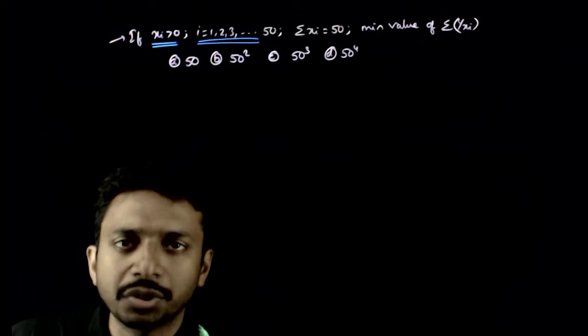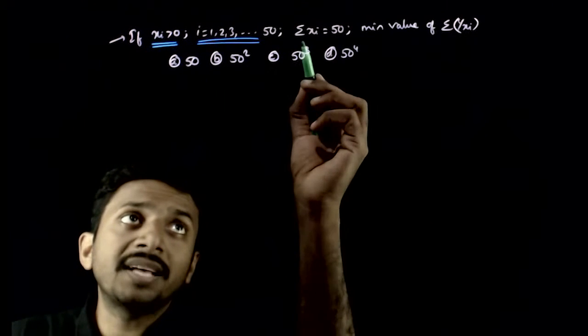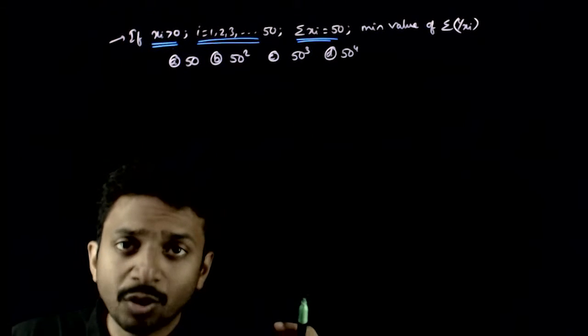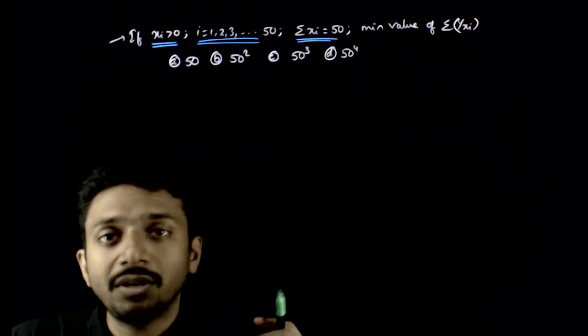X1, X2, X3, X4 and so on up to X50. And Sigma Xi is equal to 50 - that is X1 plus X2 plus X3 plus X4 and so on up to X50 equals 50.